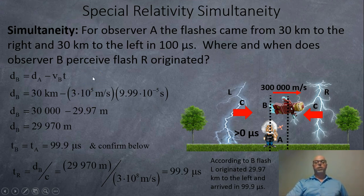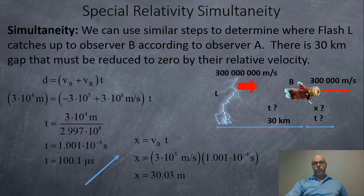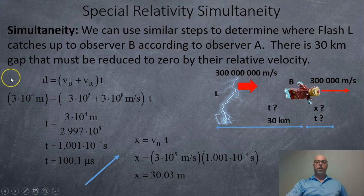And then for the left, do the same kind of thing, just a little bit of linear algebra. And we can double check that it really did work. So now if we take a look for the left flash, there's a gap, but the light has to catch up to the person who's moving away. So I'm going to subtract the velocity. So it's going to take 100.1 microseconds to reach them. And they're going to move 30.03 meters in that amount of time.